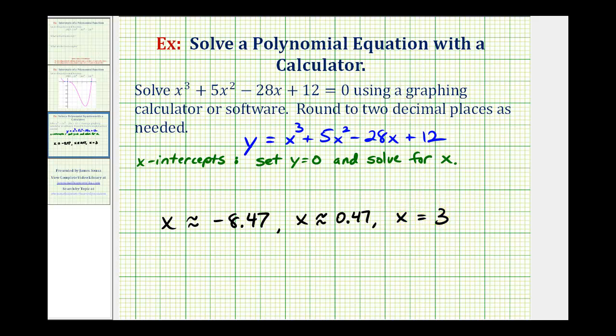So from the graphing calculator, we're able to find two approximate solutions and one exact solution to the original polynomial equation. I hope you found this helpful.